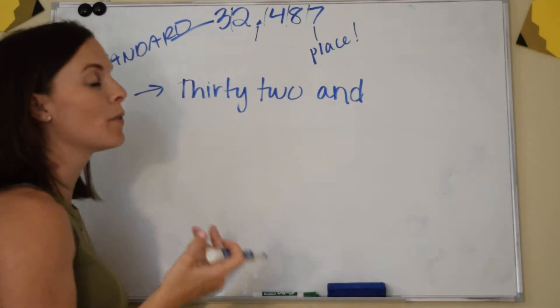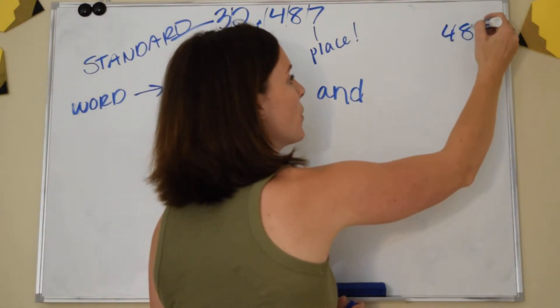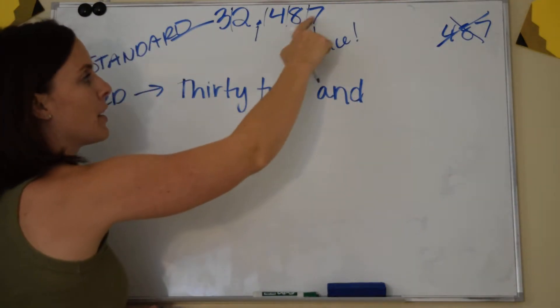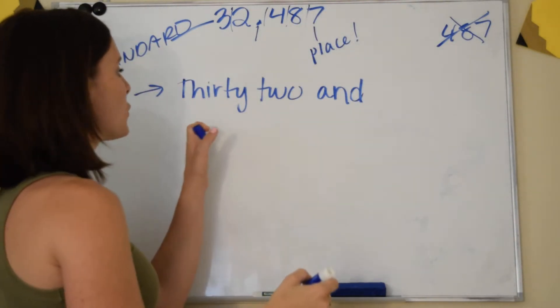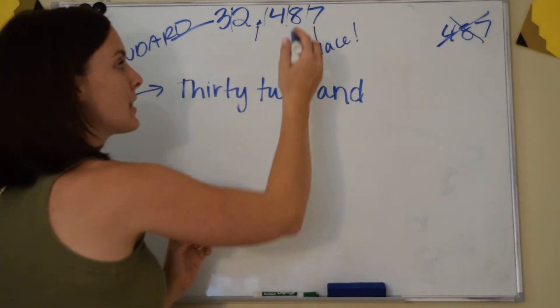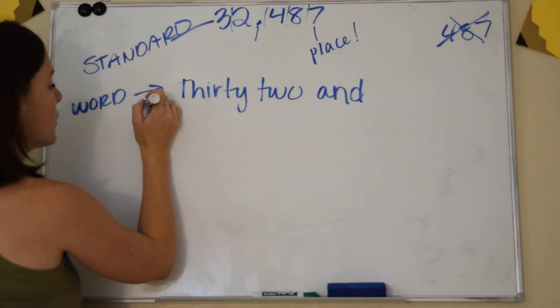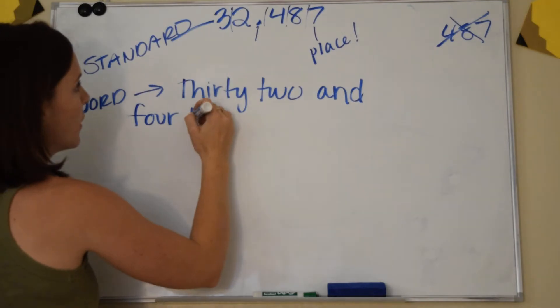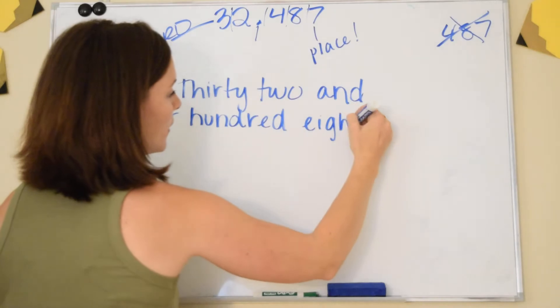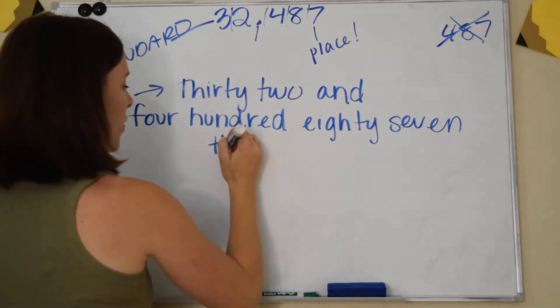It's not just 32 and 487, because if I say 487, we're thinking of the whole number 487, which is not the case. This is a small number. This is 487 out of 1000. So I have 32 and 487 thousandths, because this 7 is sitting in the thousandths. So 32 and 487 thousandths.